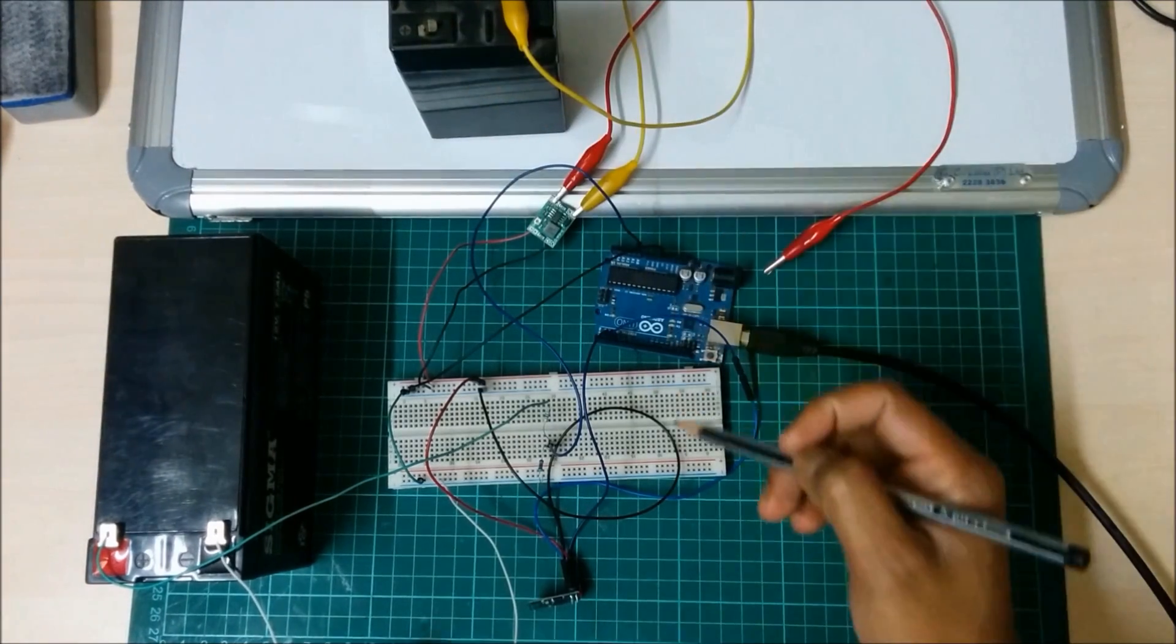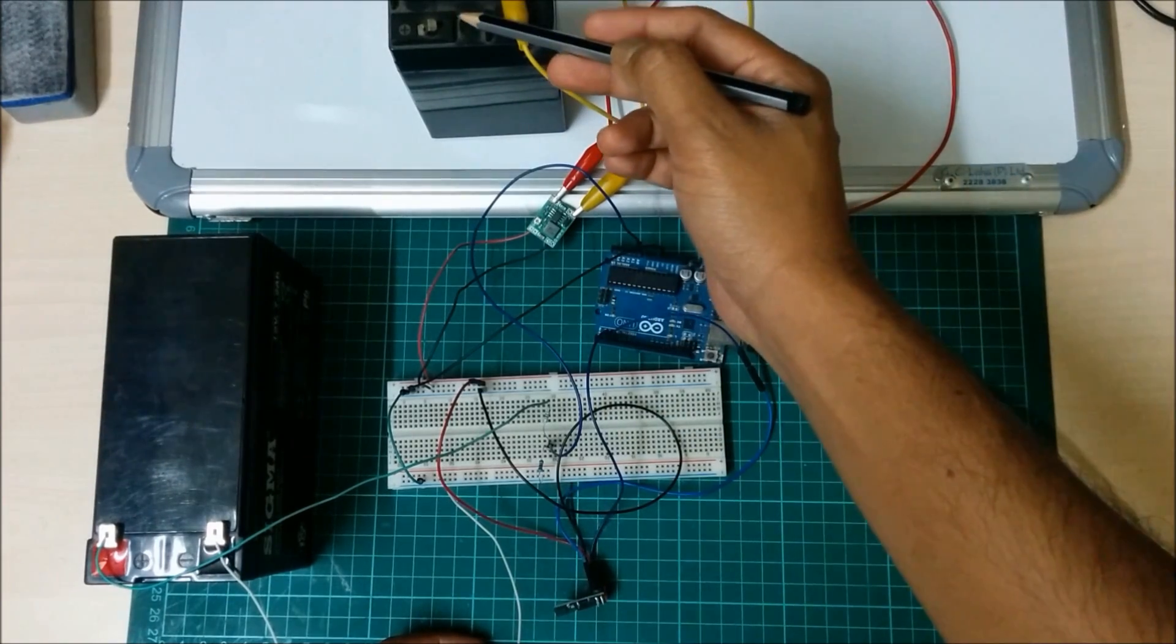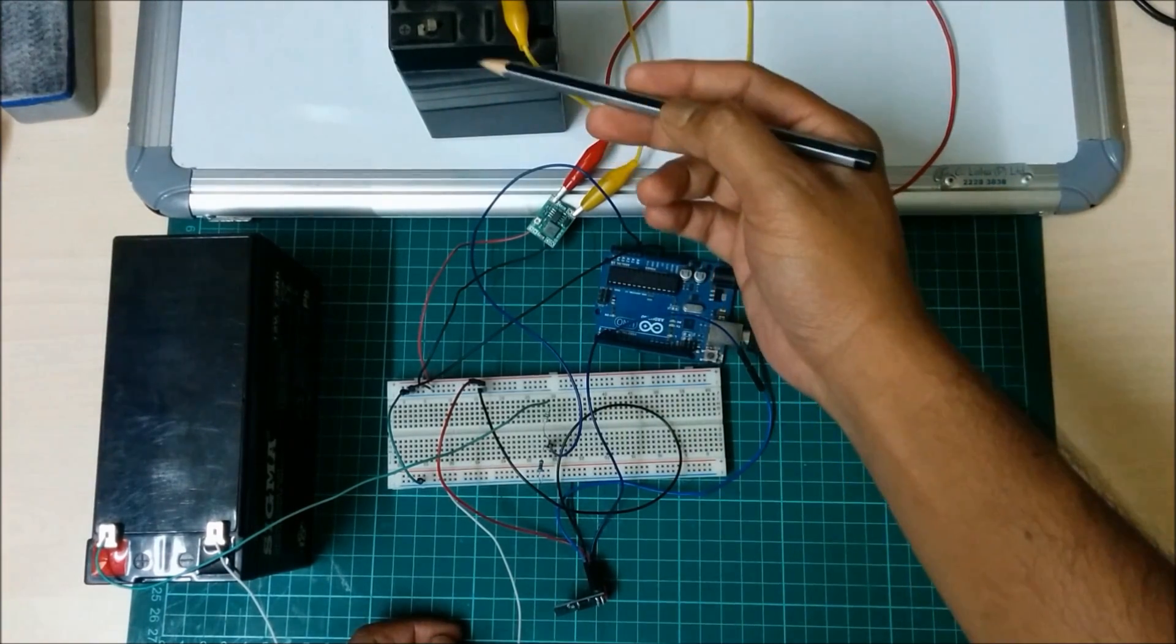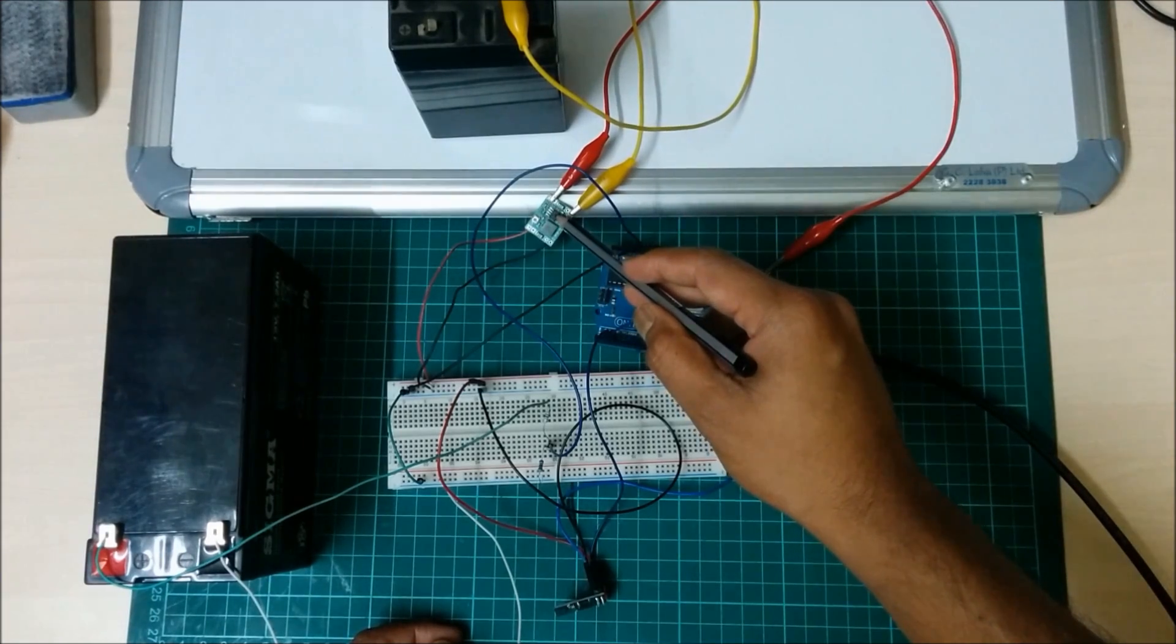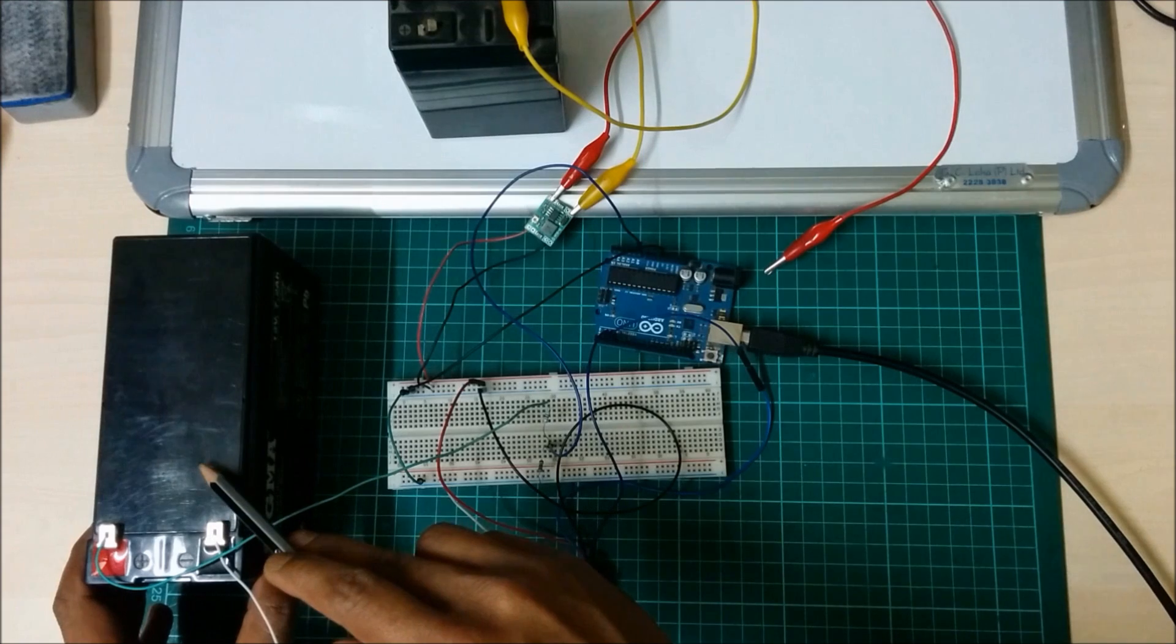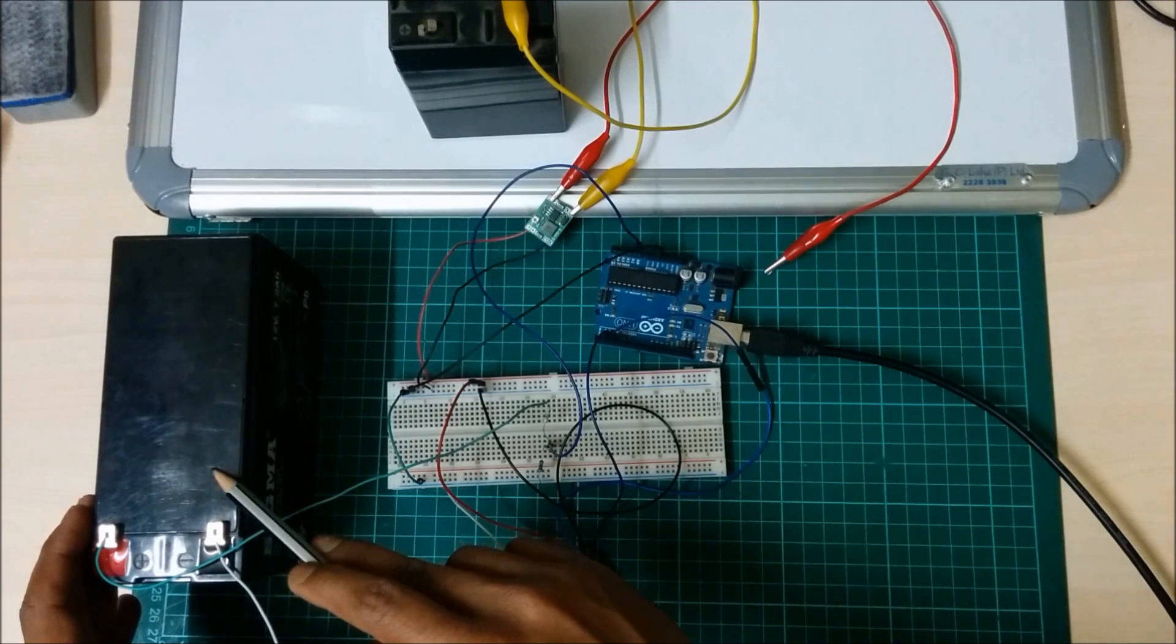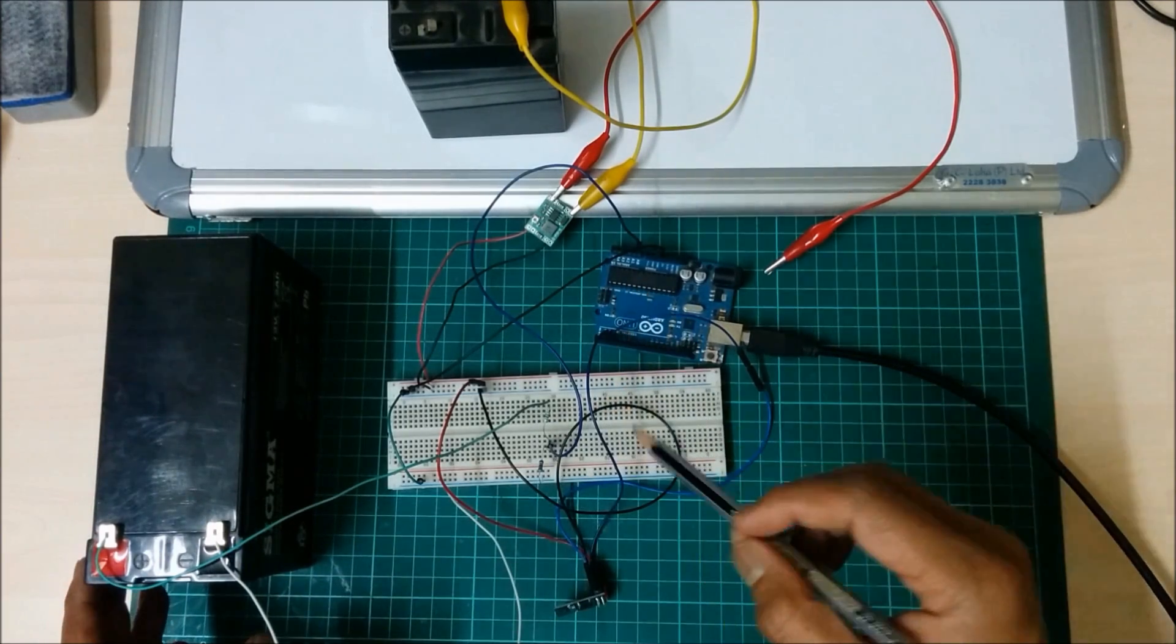First, for powering this Wi-Fi module, I step down this battery voltage to 3.3V by this buck converter. In this demonstration, I am going to measure this 12V lead-acid battery voltage and upload this battery voltage data to thingspeak.com.